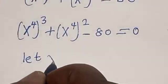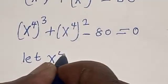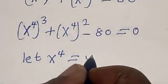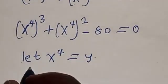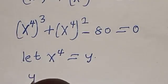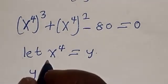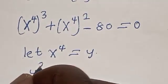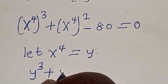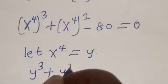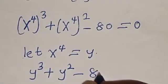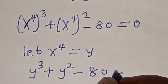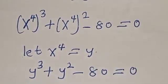Let x raised to power 4 be equal to y. Now we have y raised to power 3 plus y squared minus 80 is equal to zero.